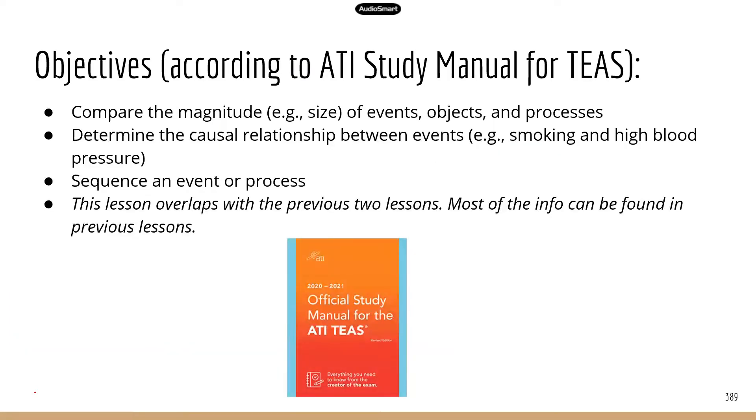So here are the objectives from ATI. First, you need to be able to compare the magnitudes, for example size, of events, objects, and processes. Determine the causal relationship between events as the cause and effect relationship.